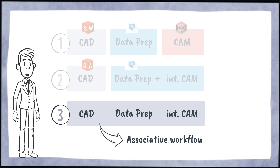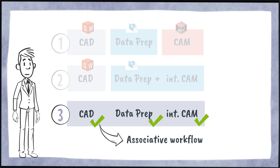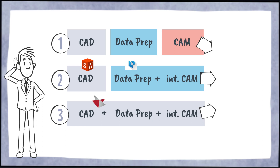For example, let's say you have designed your part, prepared the data, and built it. Then you figure out that a small change in the part geometry would improve your part. When using just one software, you can easily make the required change and all the rest — like support generation, assignment of exposure parameters, etc. — will be updated automatically.